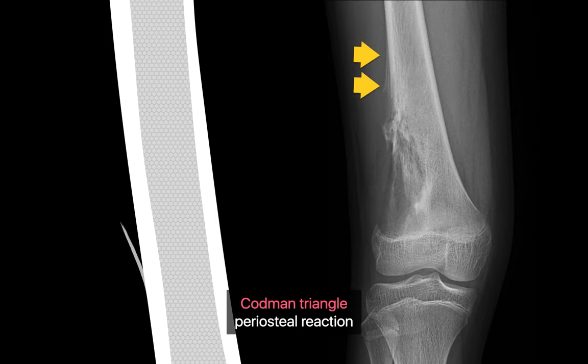If an aggressive process evolves so fast that the periosteum can barely lay down any new bone at all, only the margins of the raised periosteum may ossify. When this little bit of ossification is seen tangentially on an x-ray, it forms a small angle with the surface of the bone, resulting in a feature known as a Codman triangle.